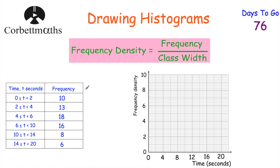So it wouldn't be fair to compare the frequencies as they are — you'd expect higher frequencies in categories with wider groups, but that's not necessarily the case. So we have to work out a thing called frequency density. I always think back to population density from geography: to compare how packed a country is, you take population and divide by the size of the country. Similarly, frequency density is calculated by taking the frequency and dividing it by the class width.